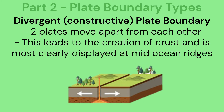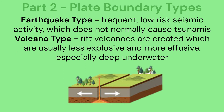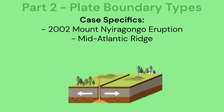Divergent or constructive plate boundary: here two plates move apart from each other. This leads to the creation of crust and is most clearly displayed at mid-ocean ridges. The earthquakes created are frequent, low-risk seismic activity which do not normally cause tsunamis. Rift volcanoes are created which are usually less explosive and more effusive, especially deep underwater. Case specifics include the 2002 Mt. Nyiragongo eruption and the Mid-Atlantic ridge.